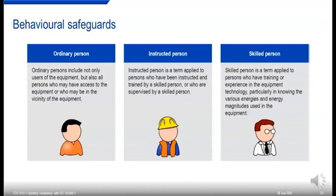An ordinary person is the general public — consider that it might include children, and elderly or impaired persons, depending on the equipment. An instructed person is somebody under supervision or trained by a skilled person, such as technicians operating specialist equipment who've been trained to do so. A skilled person is someone so knowledgeable they need no protection apart from their own skill. Here in the safety test lab, we are skilled persons at TÜV SÜD. Electrical, electronic, and service engineers might be classed as skilled too, depending on the equipment type.